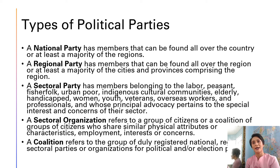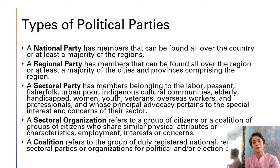A coalition refers to a group of duly registered national, regional, or sectoral parties or sectoral organizations joining together for political and election purposes. When parties have the same or at least aligned programs and ideologies, they can form coalitions in order to have a stronger or better chance of winning seats in the positions they want to get. Examples of coalitions would be the Ocho Derecho senatorial lineup in the previous election, as well as the Rainbow Coalition in previous elections.